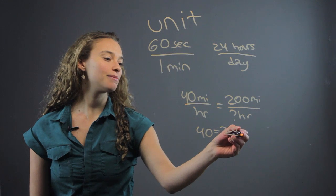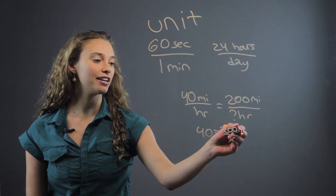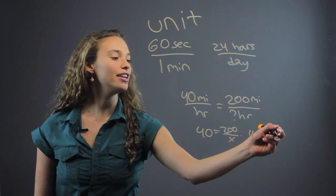So if you just multiply x to both sides to get it out of the denominator, then we have 40x equals 200.